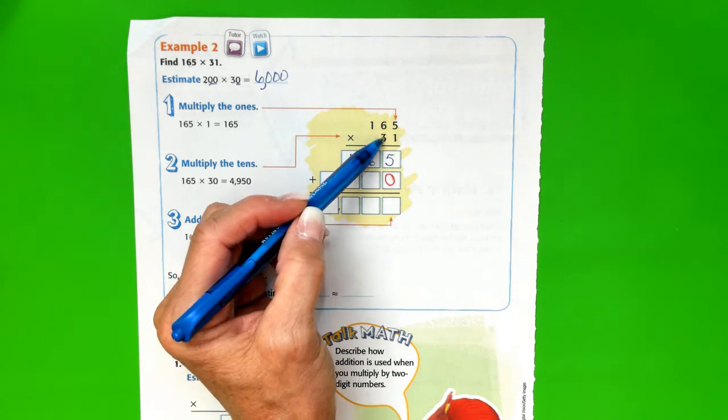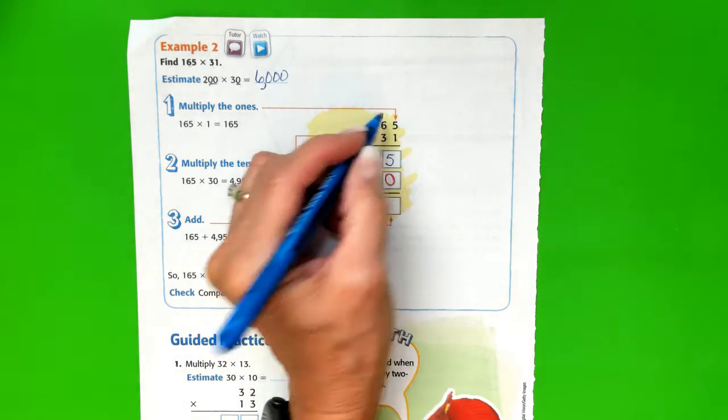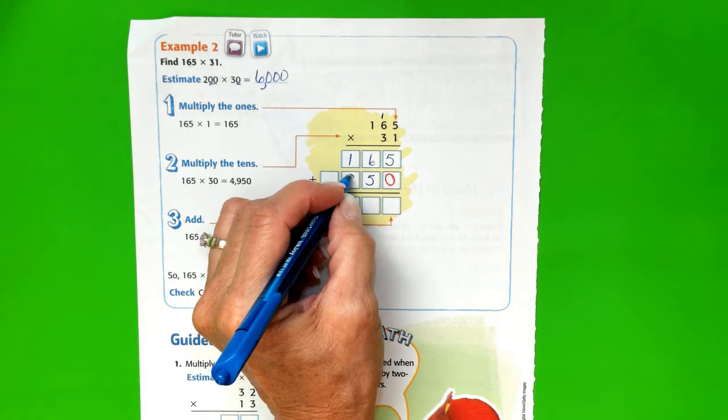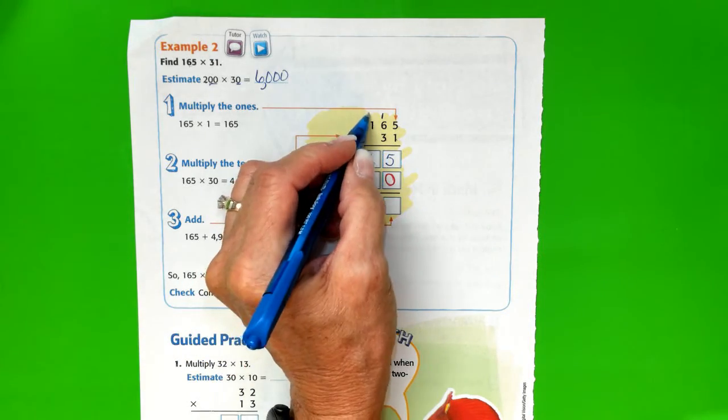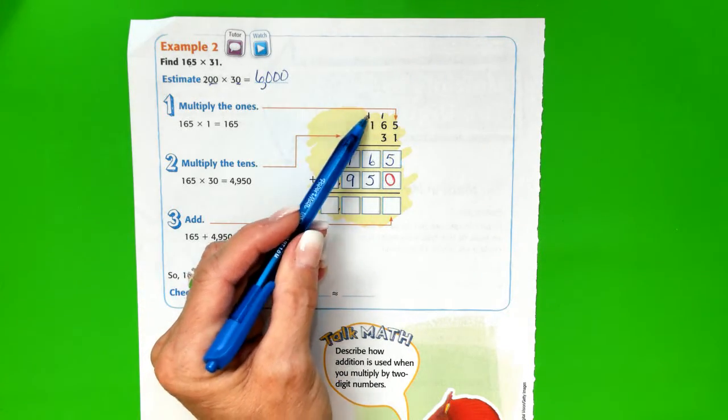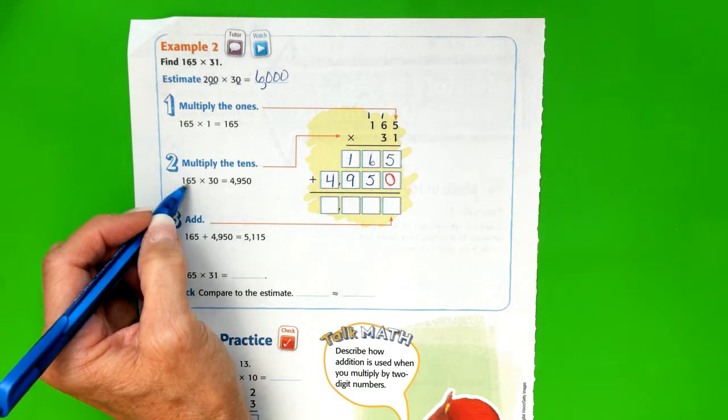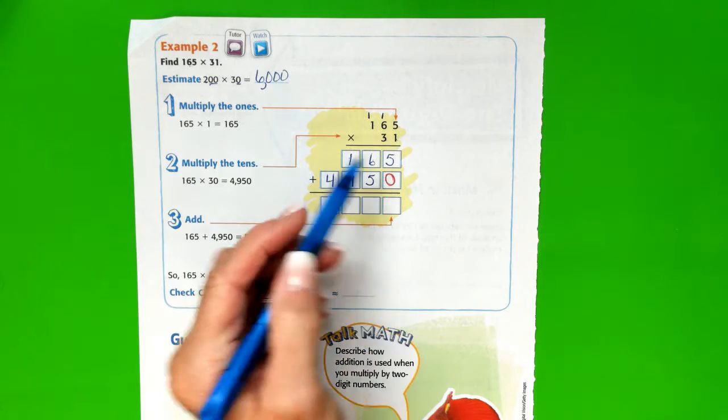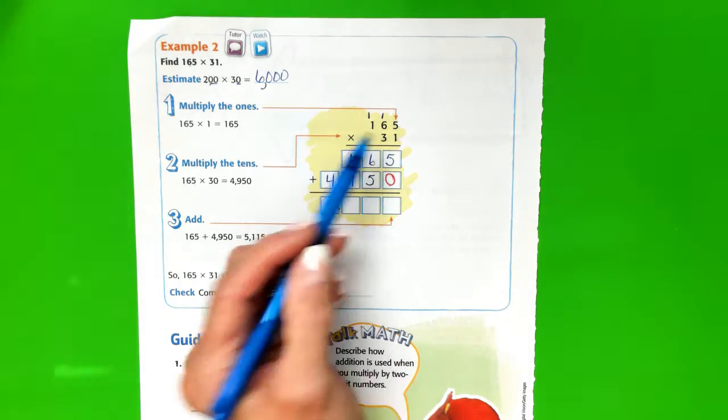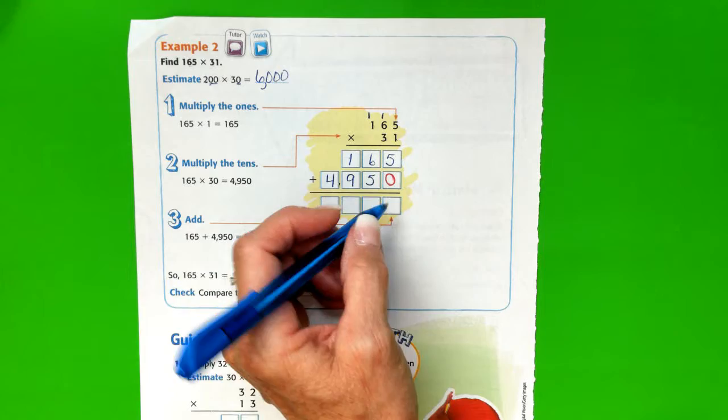Let's begin. 3 times 5 is 15, we regroup. 3 times 6 is 18 plus 1 is 19. So again, we've got something to regroup. And 3 times 1 is 3 plus 1 more is 4. So 165 times 30—that's what we did, 165 times 30, this is a 3 in the tens place—is 4,950. And now we have to add those up.